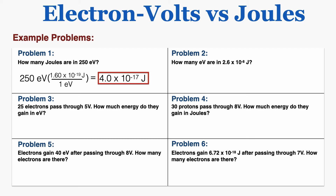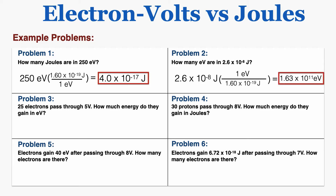Problem two asks: how many electron volts are in 2.6 times 10 to the negative 8th joules? I take that number and multiply by a conversion factor, putting joules in the denominator to cancel it and replacing it with electron volts. The answer is 1.63 times 10 to the 11th electron volts.